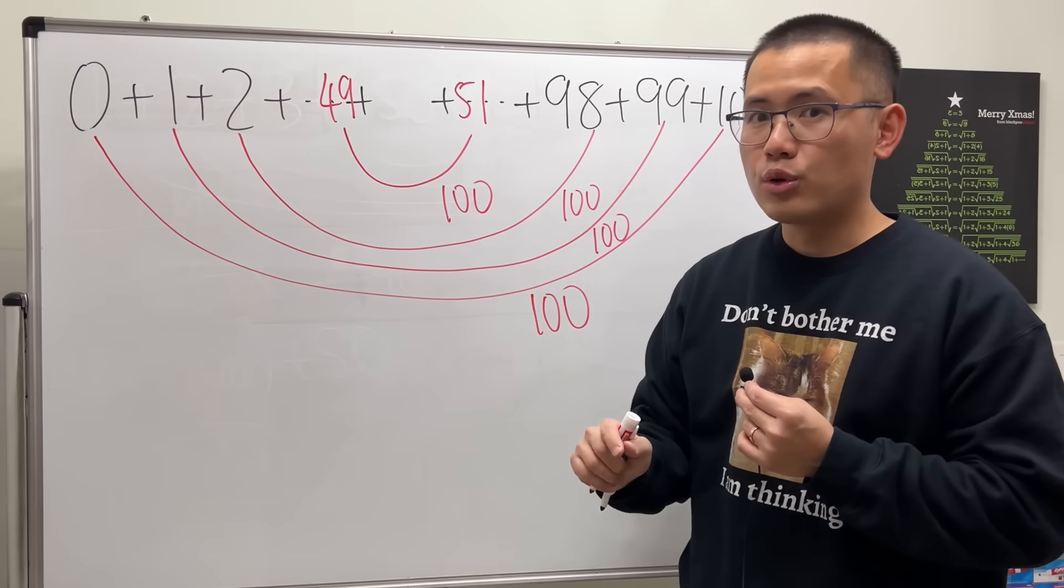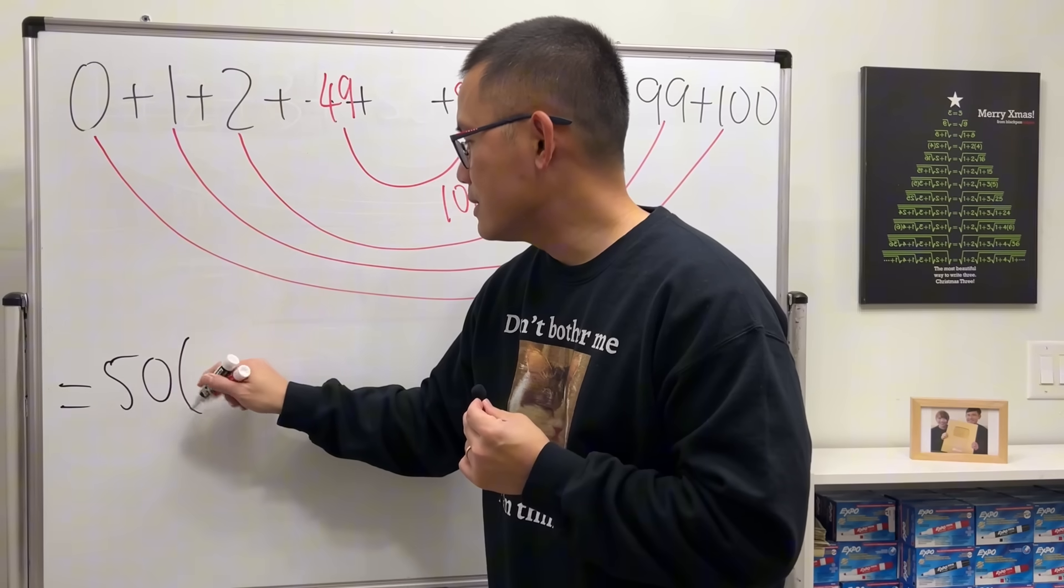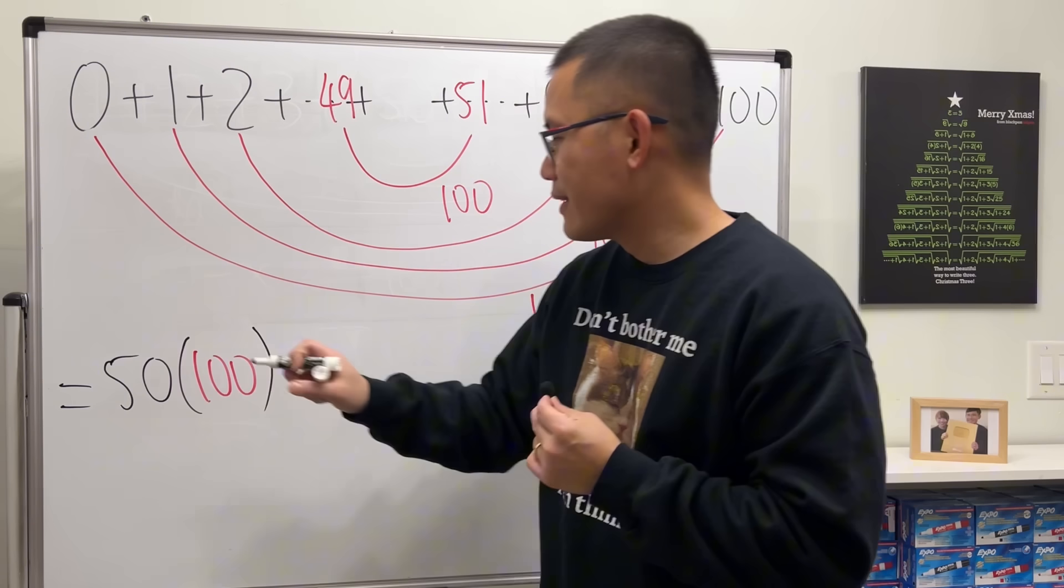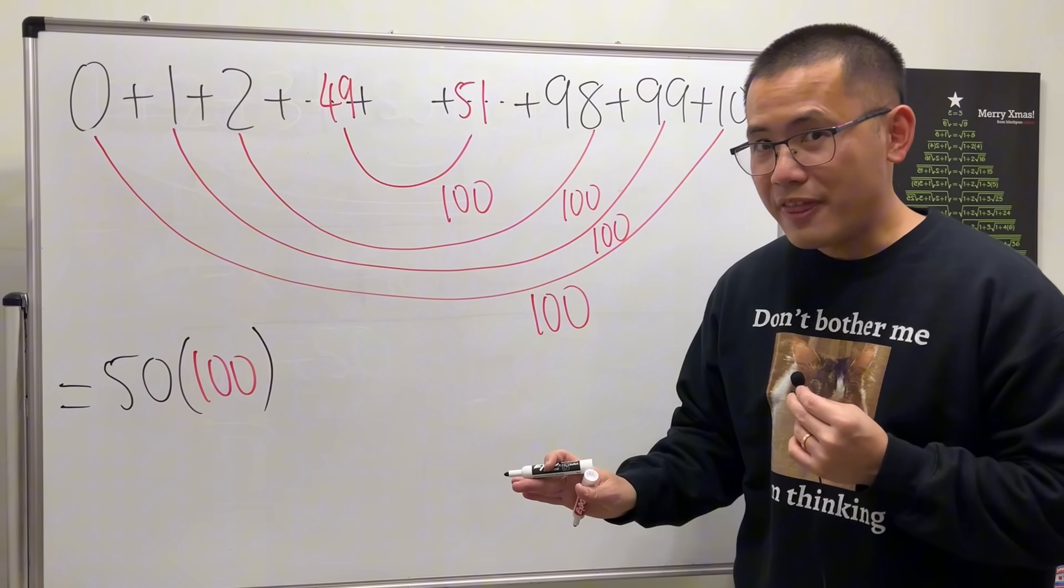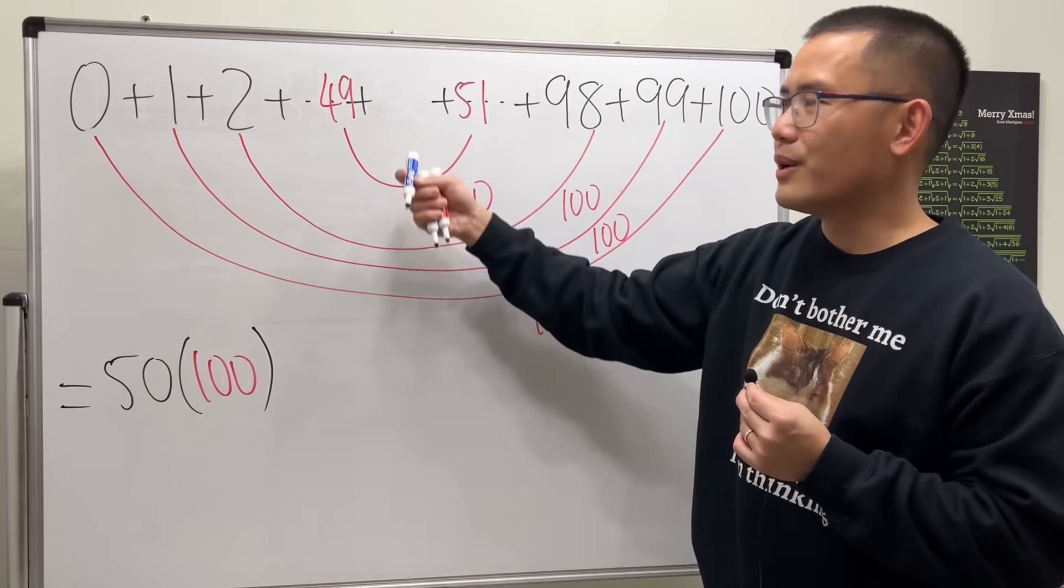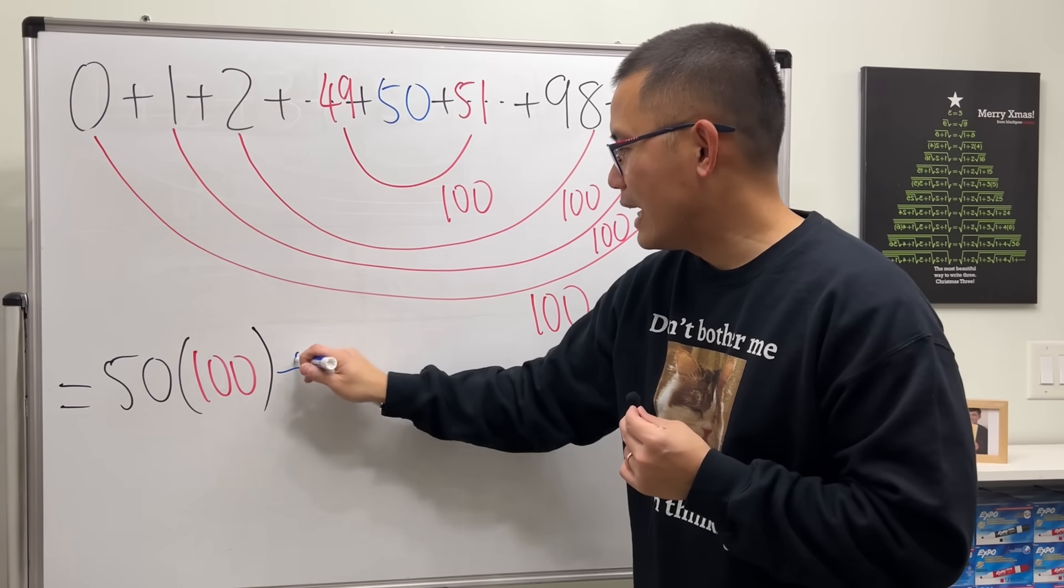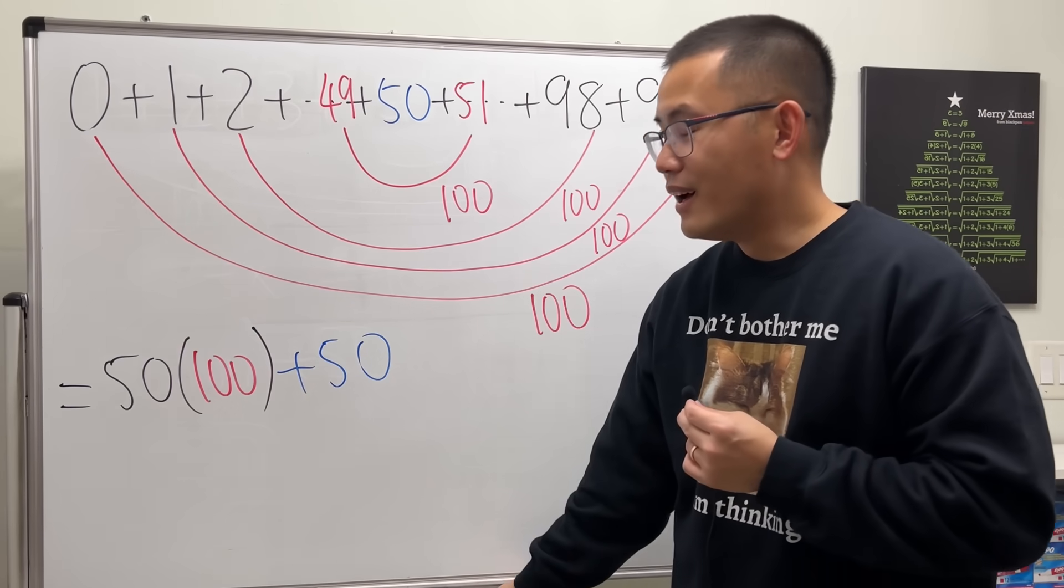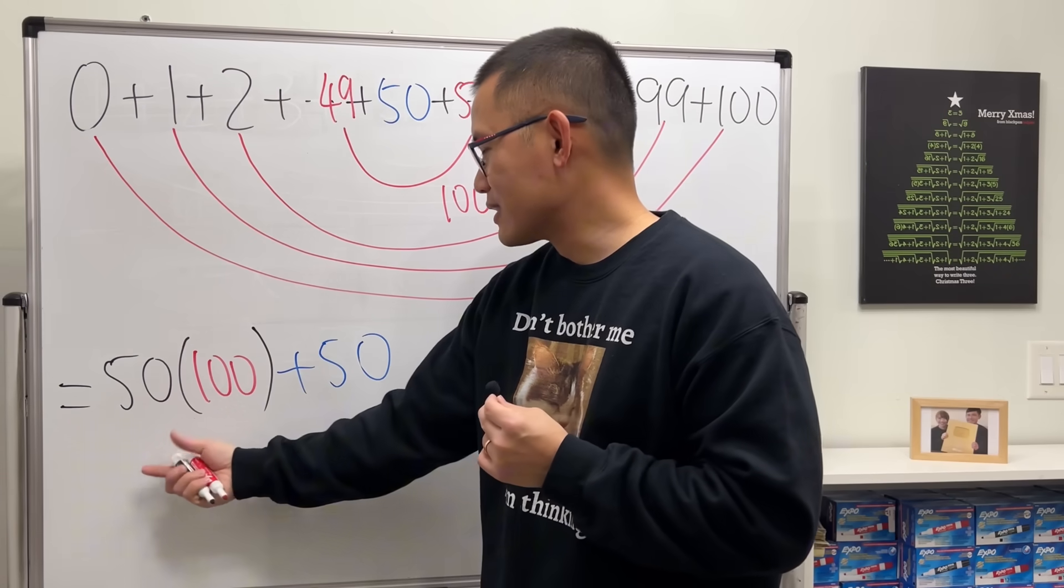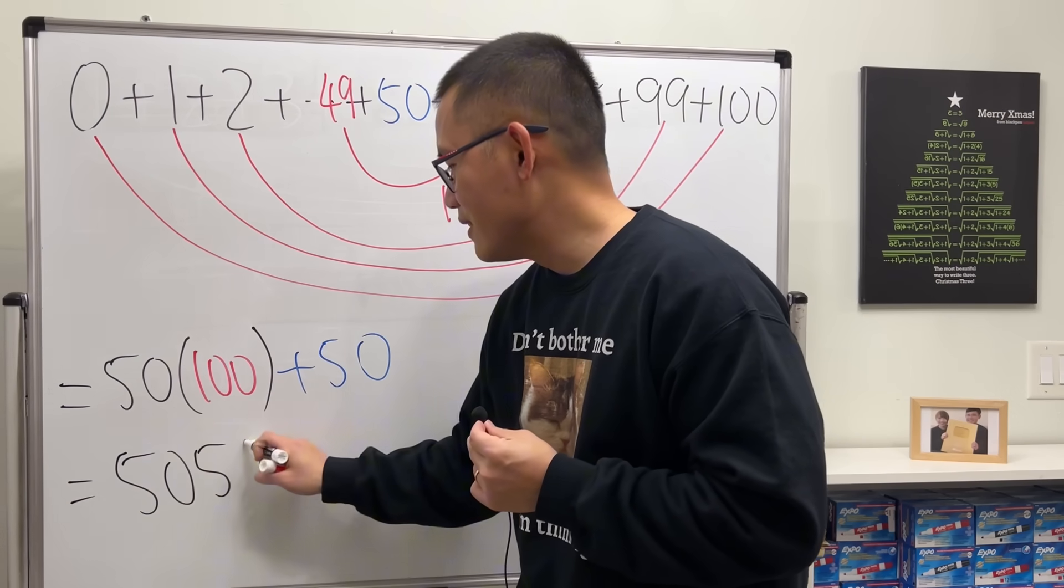Now how many of this 100s do we have? Well, it's not 49 because we started at zero. So in fact we have a total of 50 of this 100s. So we have 50 times 100, but the answer is not 5000 though, because remember we still have the 50 in the middle. So we will have to add the 50 here. Altogether this is 5000 and then plus 50, so the answer is 5050.